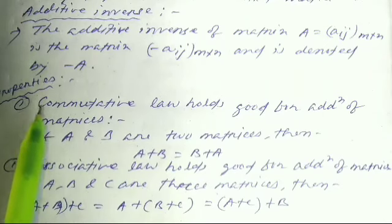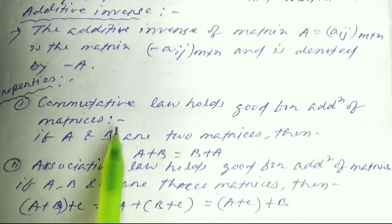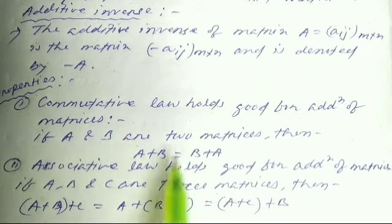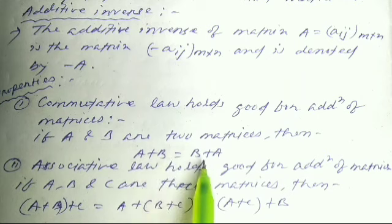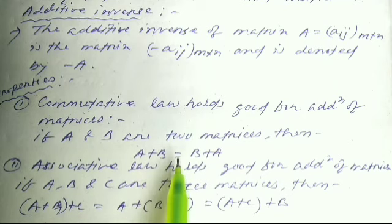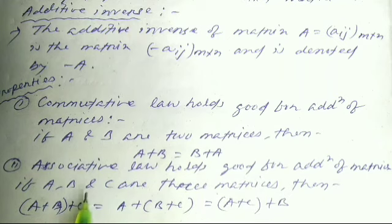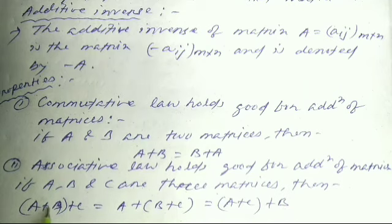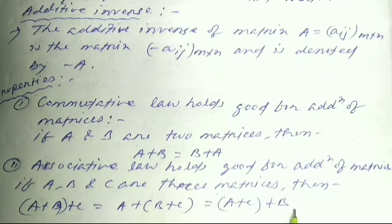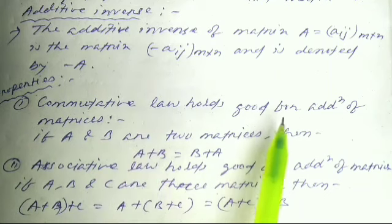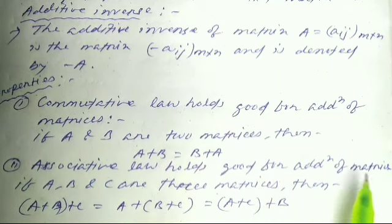Now, properties of addition: The commutative law holds good for addition of matrices. If A and B are two matrices, then A + B = B + A. This is the commutative law — the order of addition does not matter. Similarly, the associative law holds good: if A, B, and C are three matrices, then (A + B) + C = A + (B + C).